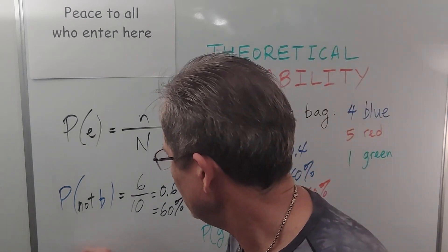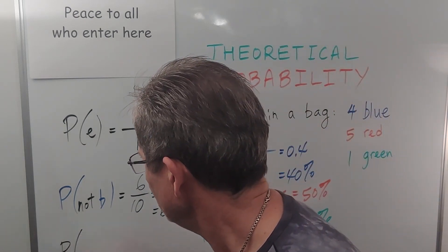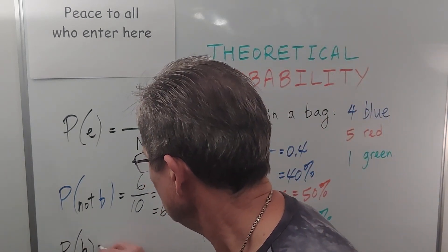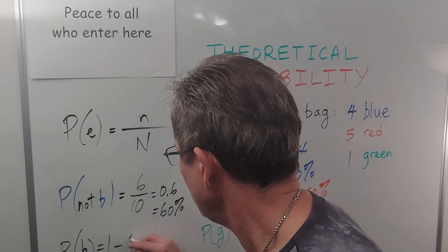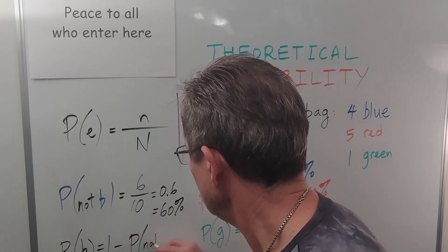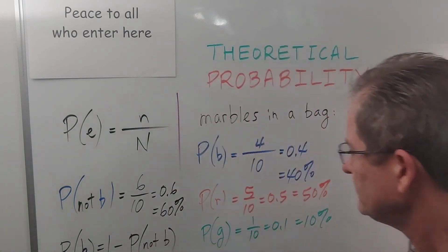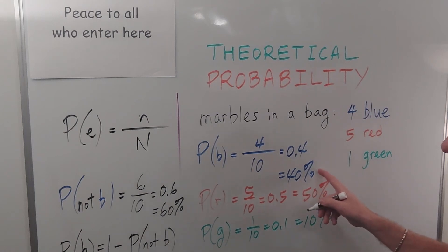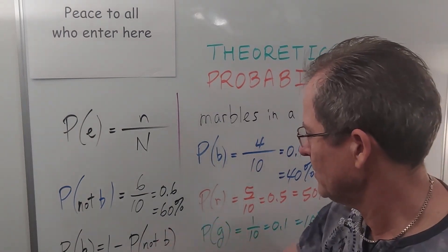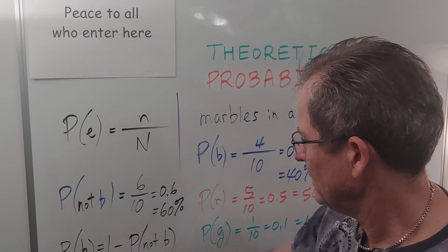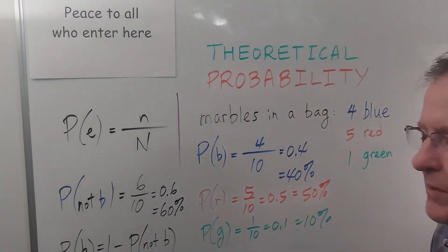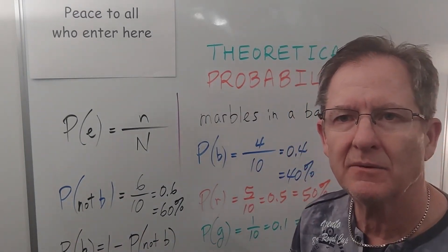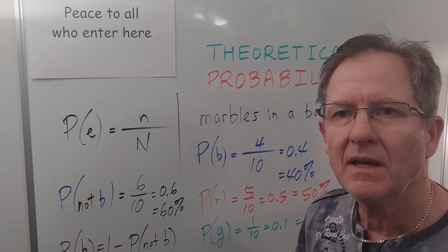So you'll notice that the probability of blue is 1 minus the probability of not blue because that was 40 and that's 60. So 1 minus 60 is the same as we had over here 40. That's a handy little relationship between the two.